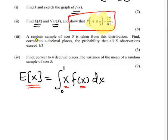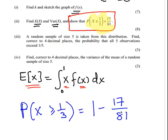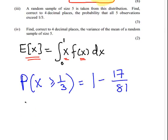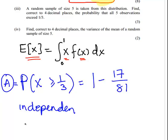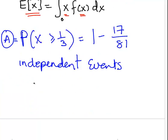Now a random sample of 5 is taken from this distribution. Find, correct to 4 decimal places, the probability that all 5 observations exceed 1/3. What is the probability of exceeding 1/3? So that is probability of X being greater than or equal to 1/3. Now it's a continuous distribution, so we can express exceeding 1/3 as 1 over 3. And that is 1 minus 17 over 81. So these are independent events. We're going to call that probability a, and the independent events, what's the probability of a happening 5 times? Well, if it's an independent event and it happens 5 times, it is simply (1 - 17/81)⁵.